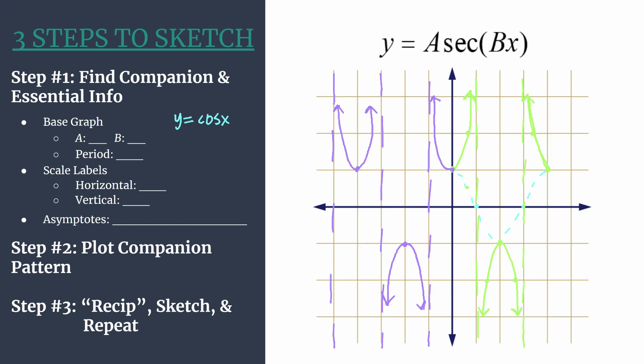So hopefully this gives you a better understanding of our template for sketching unshifted secant graphs using this three steps to sketch method. If everything hasn't fallen into place yet, don't worry about it. Graphing secant is a very complex task that really is going to start to click once you work enough examples. So like I said before, I will be posting many more worked examples of secant graphs where I'll be using this method. So check those out and thank you so much for watching.